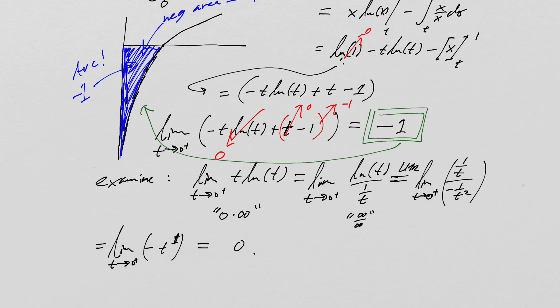I hope this has helped you see the different ways you can take finite limits of functions where a vertical asymptote is involved. You define your integral where it exists, then slowly work the domain closer and closer to the asymptote, and see if that limit exists — that's the basic idea. I'll stop here and do more examples in another video.